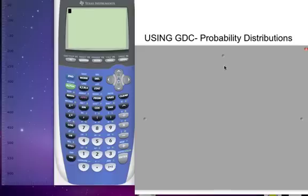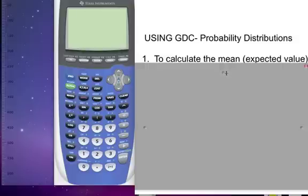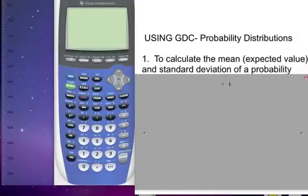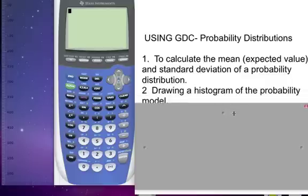We're going to use our GDC to do some probability distributions. In this podcast, we're going to calculate the mean expected value and standard deviation of probability distributions, and then we're going to draw a histogram of the probability model.